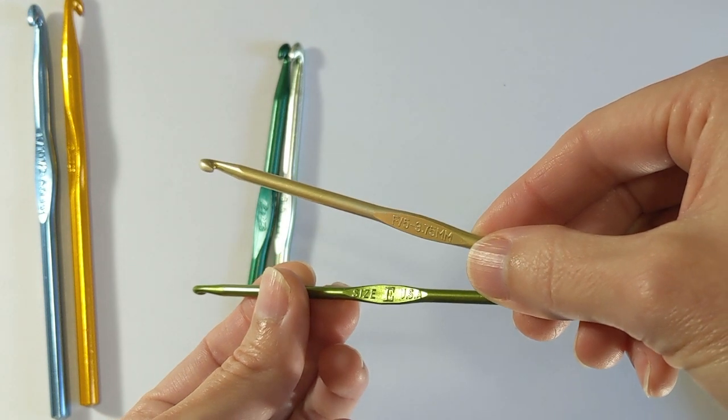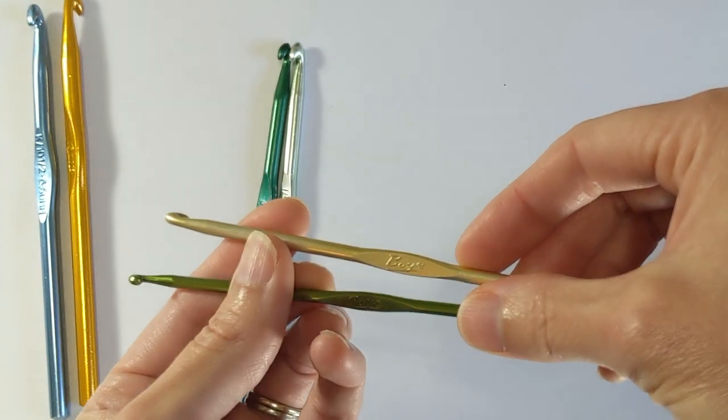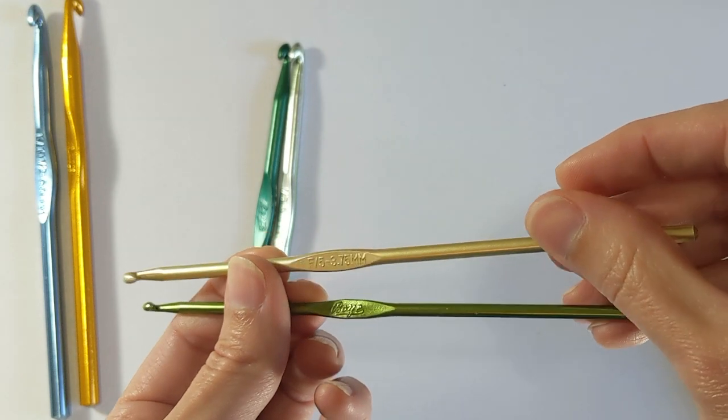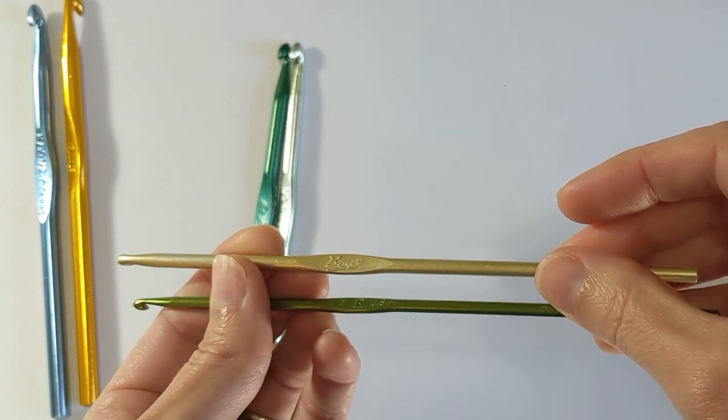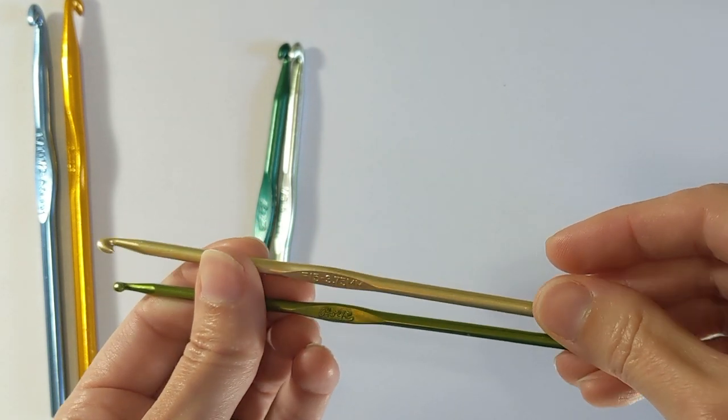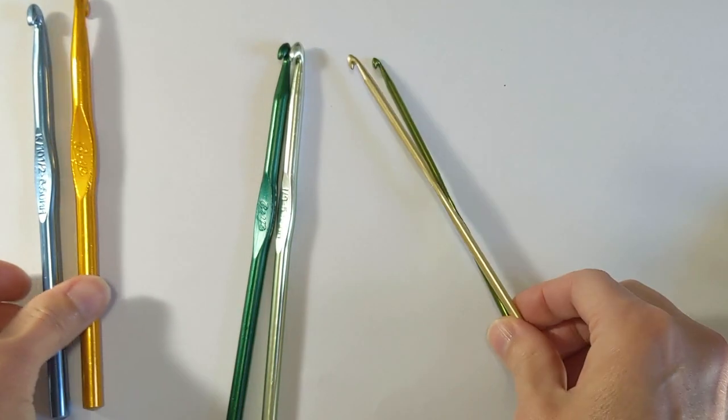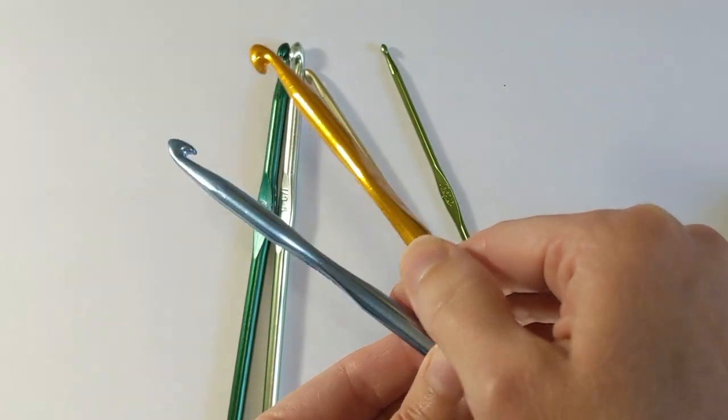Also the fact that the older ones are stamped that they are made in the USA is a big clue as well. I'm not sure exactly where the modern hooks are made, perhaps China, perhaps India, somewhere overseas, but the ones that are older will say that they are made in the USA.